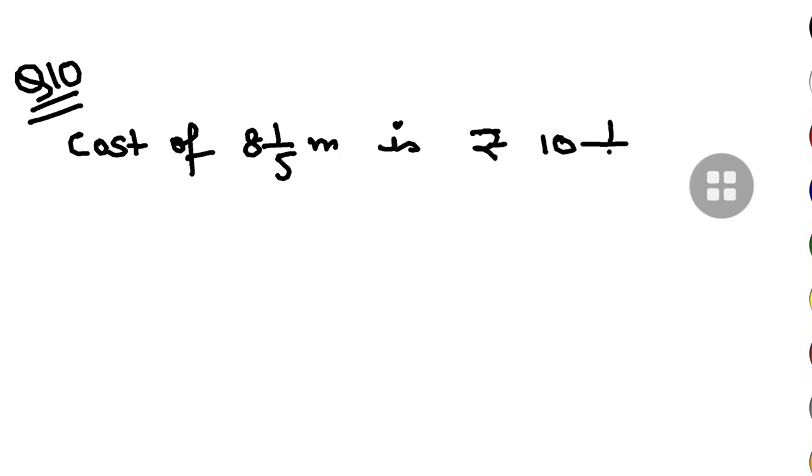Now I shall move on to question number 10. Question number 10 says, the cost of 8 and 1 by 5 meter of plot is rupees 10 and 1 by 4. So what is given? Cost of 8 and 1 by 5 meter is rupees 10 and 1 by 4. What have you to do? You have to find the cost of 1 meter. So how much will the cost of 1 meter be? Rupees 10 and 1 by 4 divided by 8 and 1 by 5.